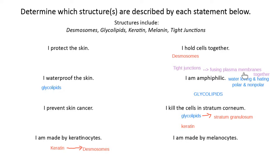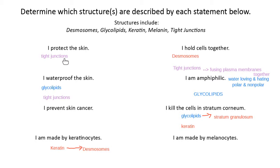By fusing the plasma membranes so nothing can get through, that helps me do another function on our list. Tight junctions help us protect the skin by not letting things in — they protect us by keeping things like bacteria and viruses out. Nothing can sneak in between those cells. And they waterproof the skin by making sure there's no space for water to sneak in and out.